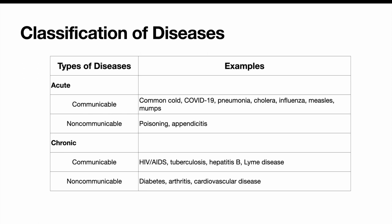Here's a graph showing types of diseases and examples. We have acute disease and chronic disease as our two categories. Some diseases can be acute and communicable — they can last a short time and be transmitted person to person. Examples include the common cold, COVID-19, pneumonia, cholera, influenza, measles, and mumps. An important thing to remember is that communicable disease doesn't always have to be transmitted between people — it could be communicable via a vector.